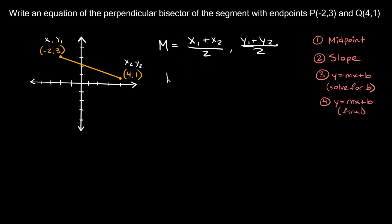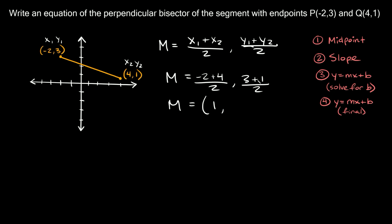To find the midpoint it's going to be: negative 2 plus 4, divided by 2, for the x-coordinate; and 3 plus 1, divided by 2, for the y-coordinate. Negative 2 plus 4 equals positive 2; 2 divided by 2 equals 1. And 3 plus 1 equals 4; 4 divided by 2 equals 2. So the midpoint is at (1, 2).